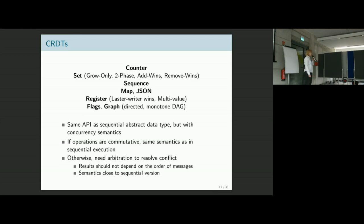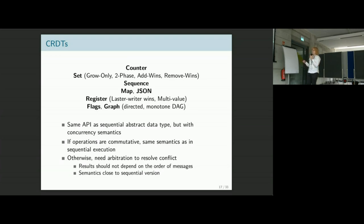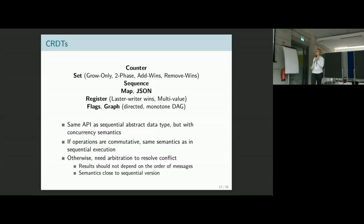If I ask how a map works, you'd say: I have a key and I can update the value stored under that key. If I have a set, I can insert elements, I can remove elements. The question is always what happens if things go concurrent. For CRDTs, you want to give semantics close to the sequential version of the data type but with safe concurrency semantics. These concurrency semantics define how conflicting updates are resolved. What you want to guarantee is that results should not depend on the order of messages — if updates happen concurrently, they can be delivered on replicas in different orders, and for any order we need to make sure the update is reflected in the final state.